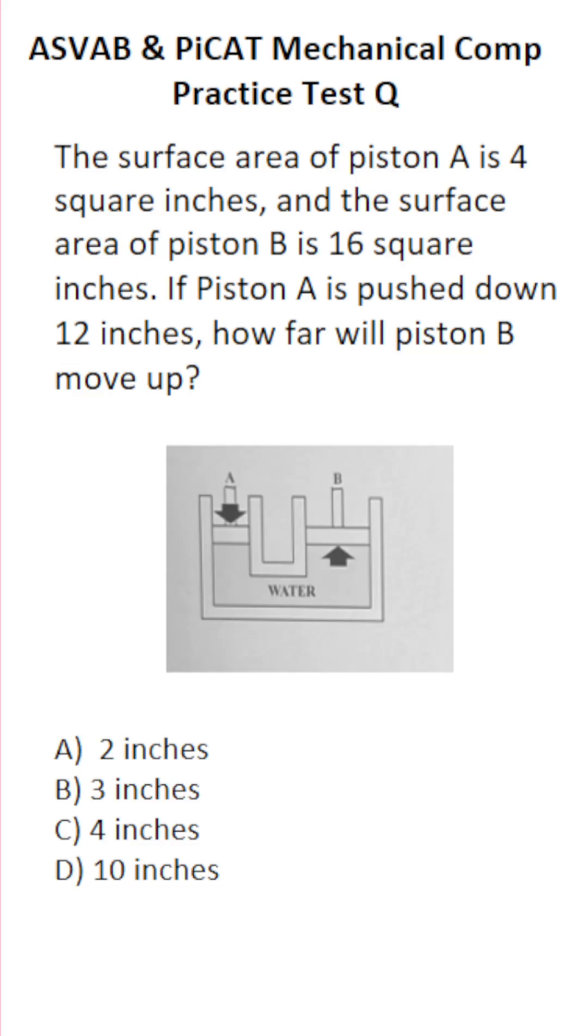This mechanical comprehension practice test question for the ASVAB and PICAT says the surface area of piston A is 4 square inches and the surface area of piston B is 16 square inches. Piston A has pushed down 12 inches. How far will piston B move up?